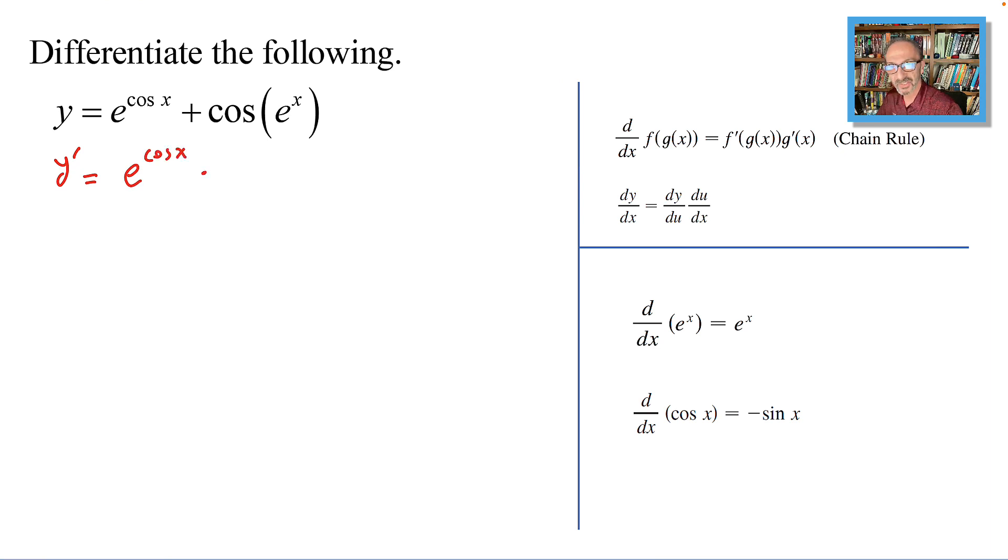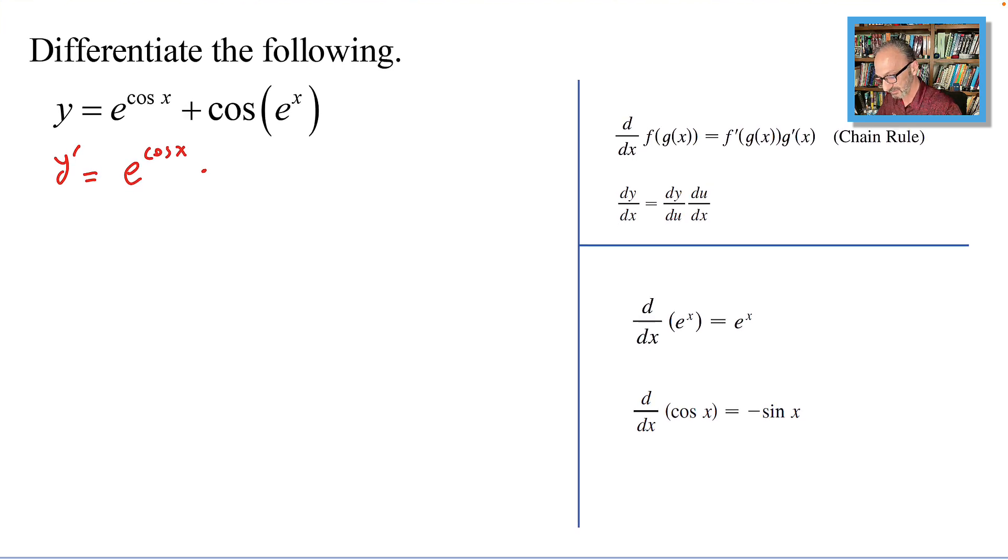will end up e to the cosine x as is, times the derivative of the exponent, which is a function of x, and that is minus sine x. Let's put this inside parenthesis,